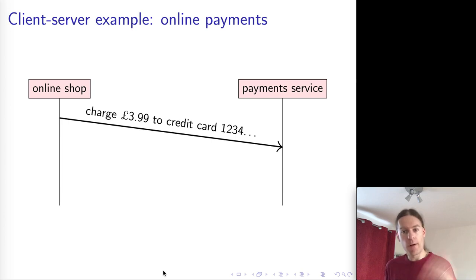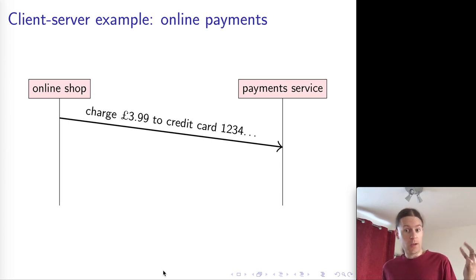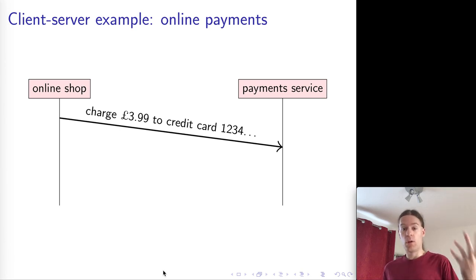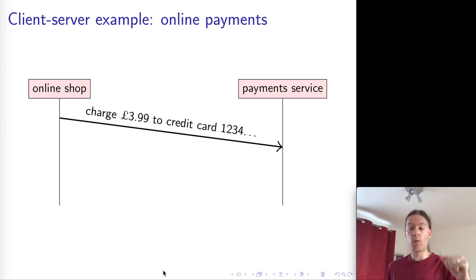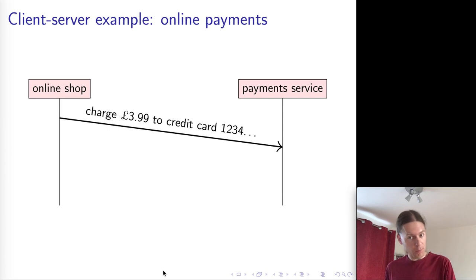This message will contain the details of your card number, how much they want to charge to that card, and various other information like your billing address. This all gets sent to the payment service. The payment service then does a whole lot of complicated stuff — they talk to the card payment network, such as Visa or MasterCard. The card payment network then talks to the bank that issued your card, makes sure you have money in your account, and that the payment can be taken.